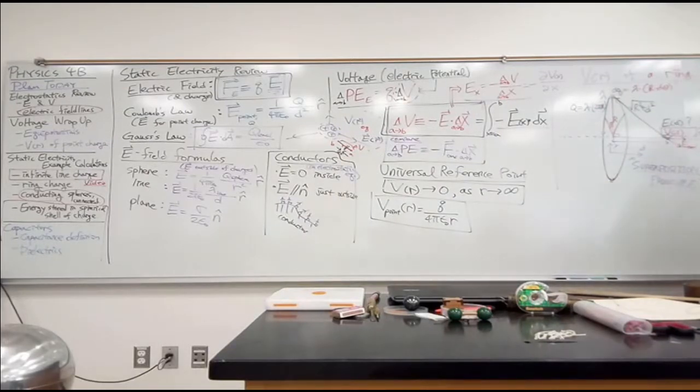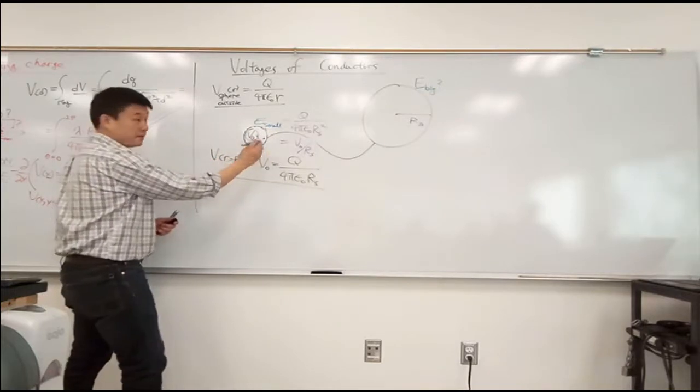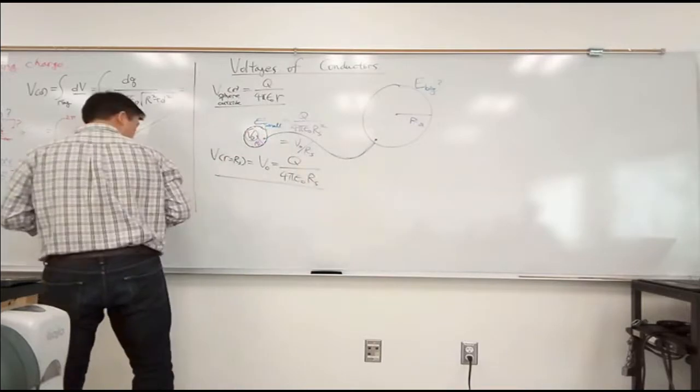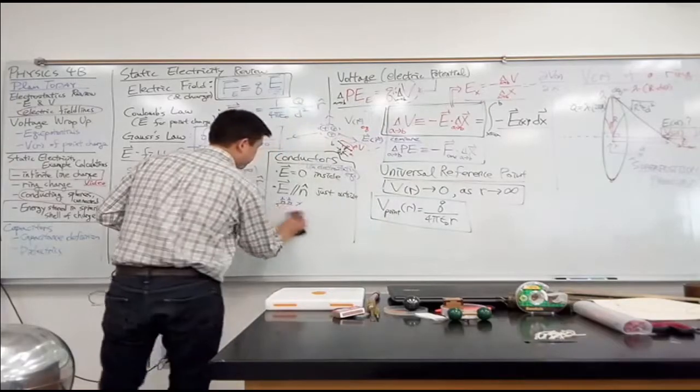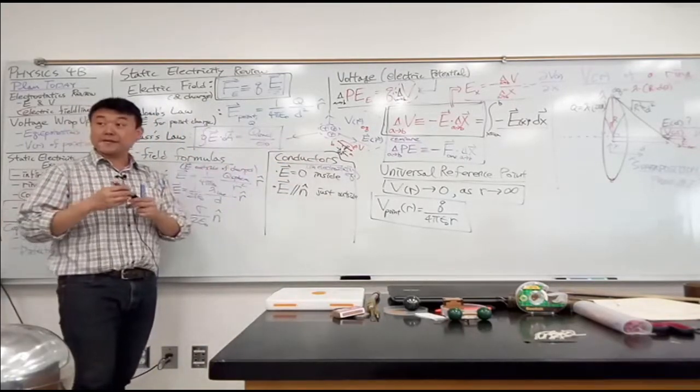So let me have you imagine a path that goes from this point, which is at V naught, and follow the path inside this wire and end up at this point here. What is my change in voltage along that path? Does my voltage change along that path?